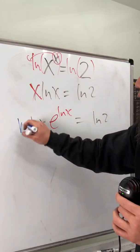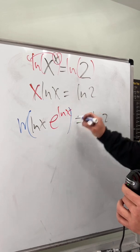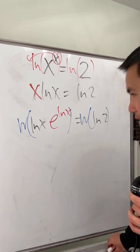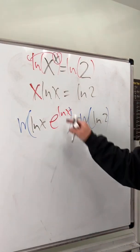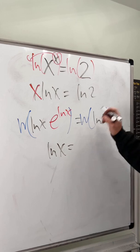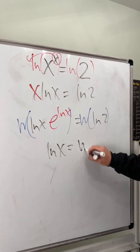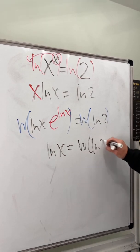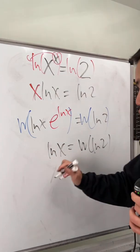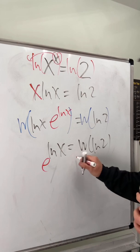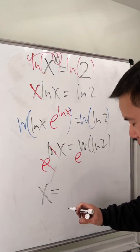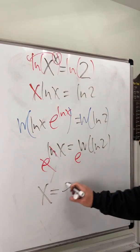We apply W to both sides — this is the first time I'm using the blue marker. On the left hand side we get back ln x, and on the right hand side we get W of ln 2. Now we solve for x by raising e to both sides, and they cancel on the left.